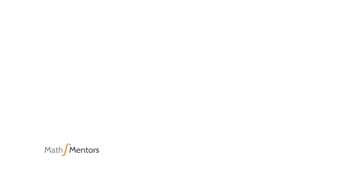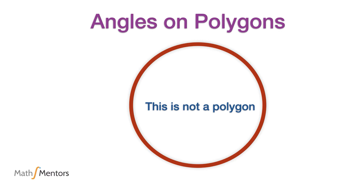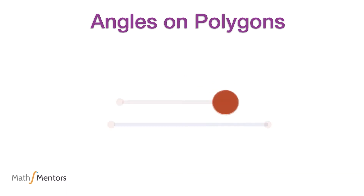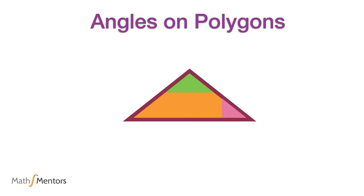Polygons are closed shapes that are made out of straight lines. For example, a circle is not a polygon — it is closed but not made out of straight lines. An open shape made of straight lines is also not a polygon. In order to close such a shape we need another straight line, so a polygon needs at least three straight lines. A shape made out of three straight lines is commonly known as a triangle, and a triangle is an example of a polygon.